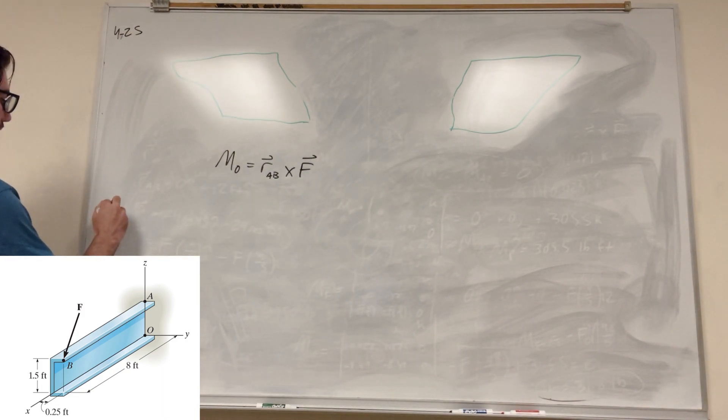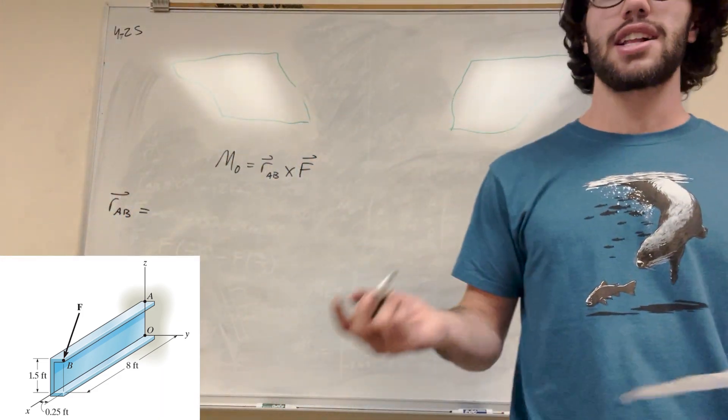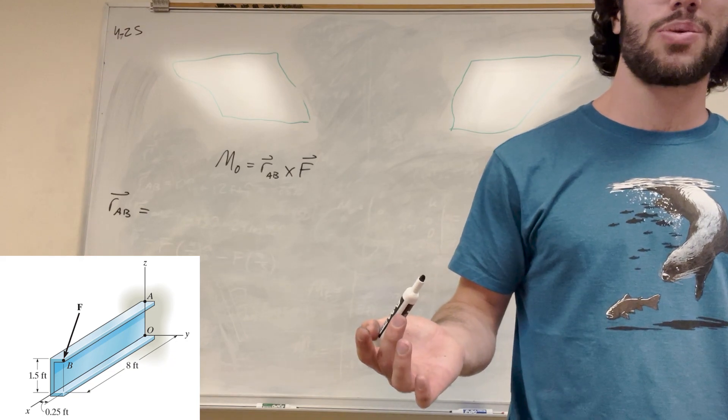So let's go ahead. R_AB. Well, where does it go? It starts from the origin, so all you have to do is tip minus tail. The tail is at zero, so all you have to do is find it.